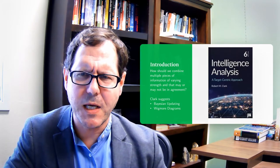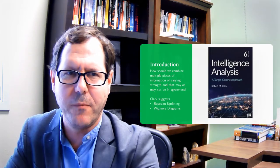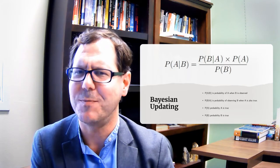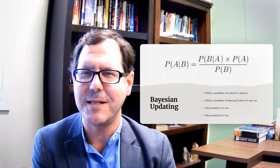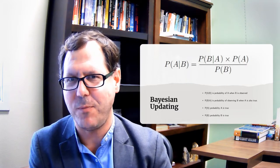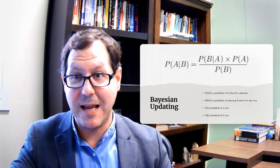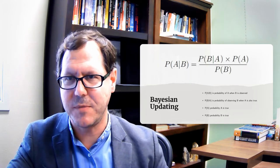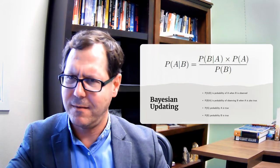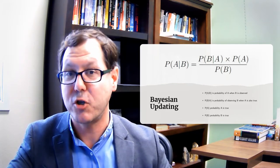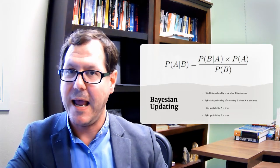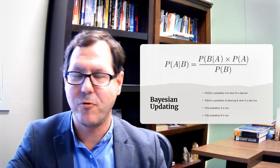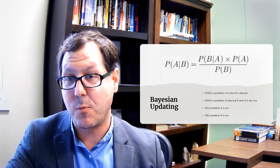One is Bayesian updating. And the other is using Wigmore diagrams. I had done a bit of work on Bayesian updating in the context of intelligence analysis and have a video that talks about how to do that or how to maybe use Bayesian reasoning. But Clark recognizes the challenge of doing that. The idea of Bayesian updating is that you are starting with an initial probability and expectation, which is your prior. And then you have a new piece of information that comes in. And we want to calculate the posterior, the probability of A given B, which means the probability that A is true conditional on B observing this new piece of information. And we calculate that using the probability of observing B if A is true times the probability of A being true divided by the probability of B. From a mathematical perspective, this is really elegant.